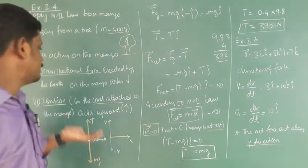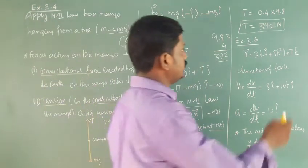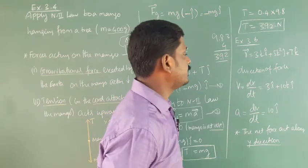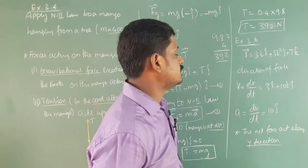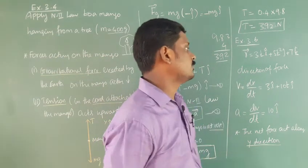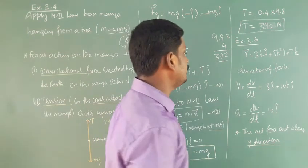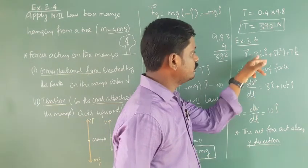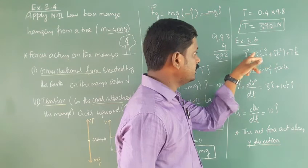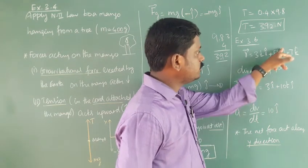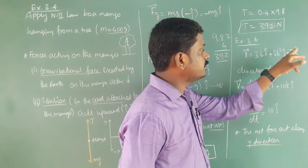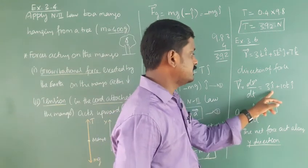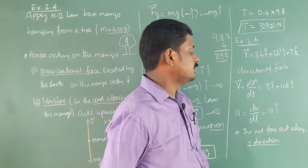This is the tension exerted by the cord on the mango. Now, example 3.6: the position vector R equals 3t î plus 5t² ĵ plus 7k̂. What is the direction of the force? The velocity V equals dR/dt, differentiating with respect to time: V equals 3î plus 10t ĵ. There is no velocity in the Z direction.